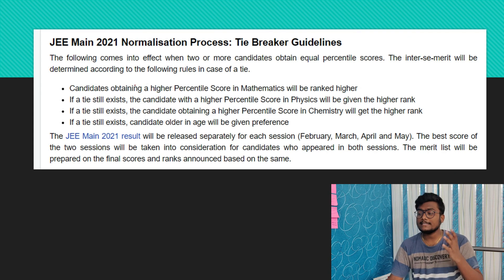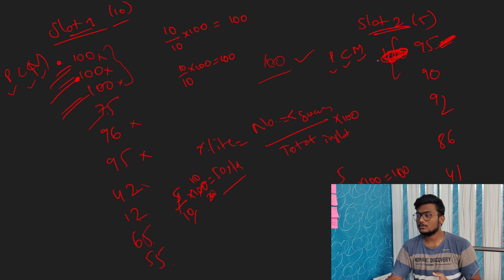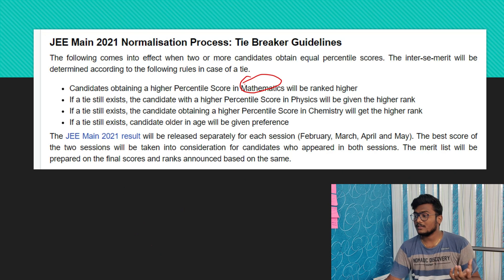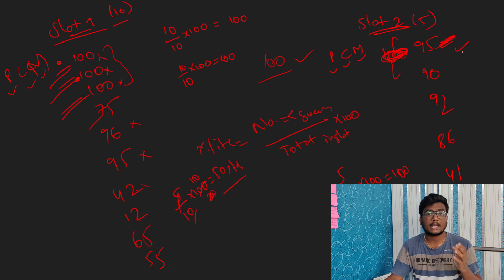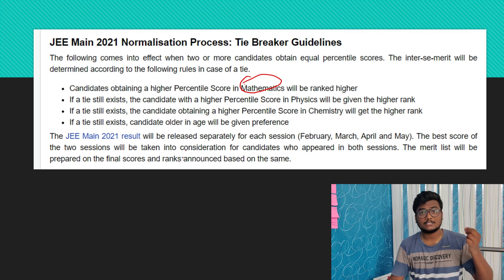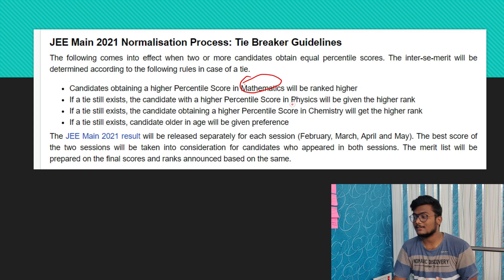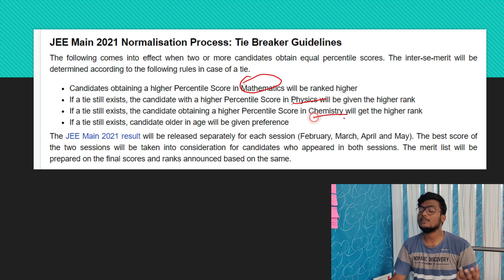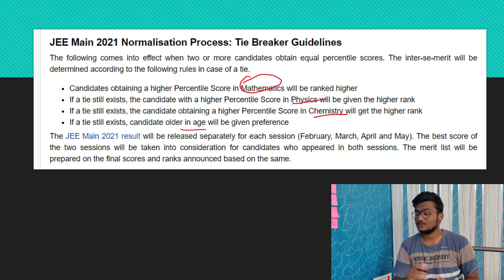When there is a tie-break, candidates obtaining higher percentile in Maths will be ranked higher. Out of tied students, whoever got the highest Maths percentile gets the top rank among them. If Maths is also equal among the next group, they check Physics. If that is also equal, they check Chemistry. If Chemistry is also equal, then age is considered — those whose age is higher are given preference. This is how percentile works and how tie-breaks are resolved.